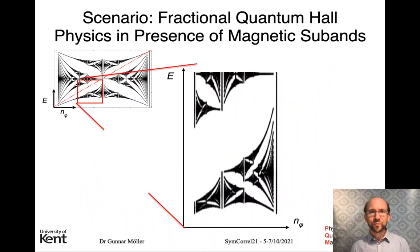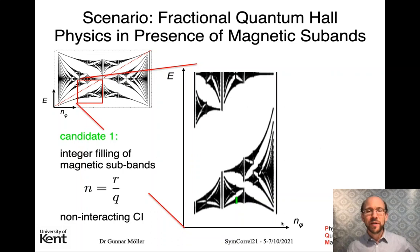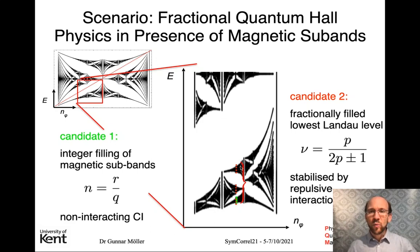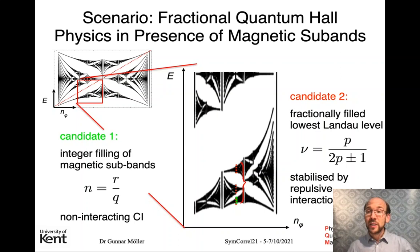Let's talk about the scenario of fractional quantum Hall physics in the presence of magnetic sub-bands. The first scenario is that we simply fill up bands from the bottom of the spectrum up to some band gap, giving us an incompressible state described as a non-interacting Chern insulator with some Chern number. The other candidate is what we get by exploring the quantum Hall physics of the lowest Landau level, filling all sub-bands in the lowest Landau level. Here we have candidate states given by, for example, the Jain series for the Abelian states, and these need to be stabilized by repulsive interactions.